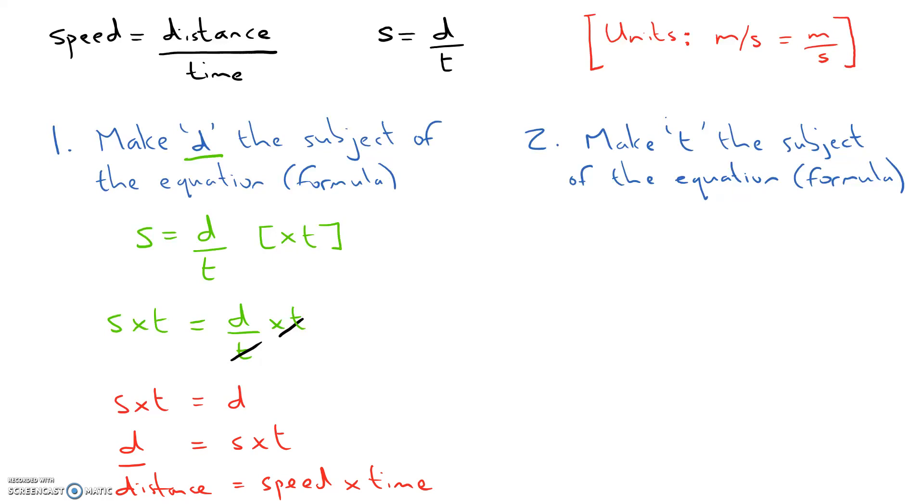Let's have a look at number 2. So number 2, make T the subject of the equation or formula. Now we could start with S equals D over T. But we'd have an extra step to do. It might be quicker to start with a formula we just derived, which is D equals S times T. Okay, so this time we need to get T on its own. T equals. So this time I've got S times T, or T times S. What will happen if we divide both sides by S?